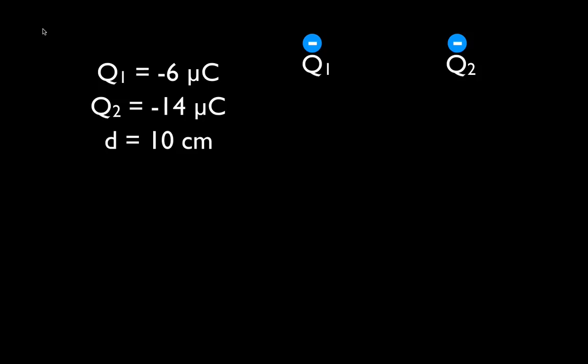You have two charges. Charge 1, Q1, is minus 6 microcoulombs. Charge 2 is minus 14 microcoulombs. It's a good idea to draw this on your page so you have a visual. And then you would mark down that the distance between the charges is 10 centimeters.